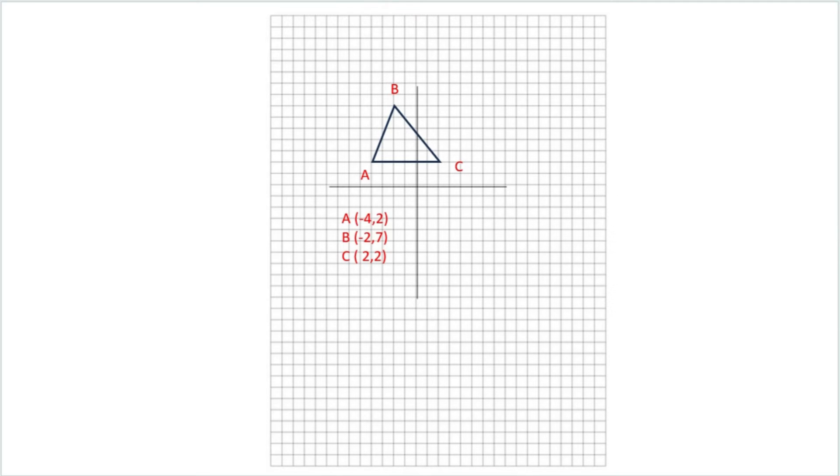So let's say I'm doing a scale factor of two. So my new A, we'll call that A prime, is going to be negative four times two. That's my scale factor. So it'll be negative eight. My y would be two times two. So that one would be four. B would be negative two times two, which gives me negative four. And seven times two gives me fourteen. And then C prime is going to be two times two, which is four. And again, two times two, which is four.